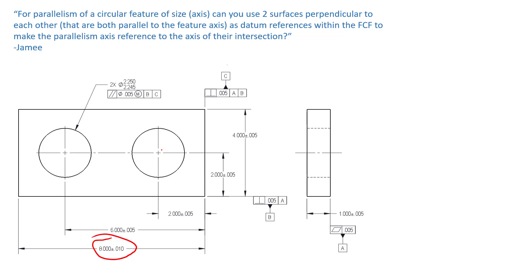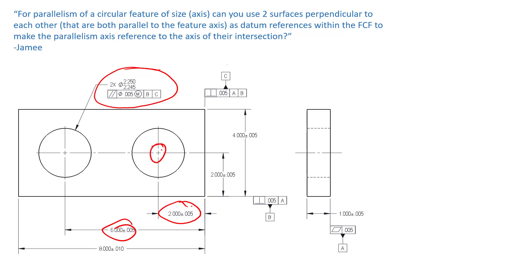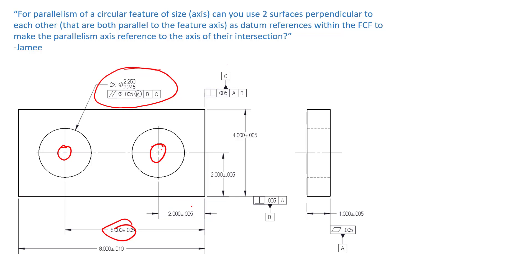Jamie, this can absolutely be done. Just a word of caution: if you're going to use parallelism instead of position, remember that position would handle both location and orientation. With orientation only, you must use plus or minus dimensions to locate the tolerance zone — not basic dimensions. If you used basic dimensions with position, those five-thousandths-diameter cylinders would be locked in both location and orientation from the datum reference frame. Great question, Jamie — I hope this clears everything up. Send your questions to questions@gdtbasics.com, and everyone have a good day. Thank you.